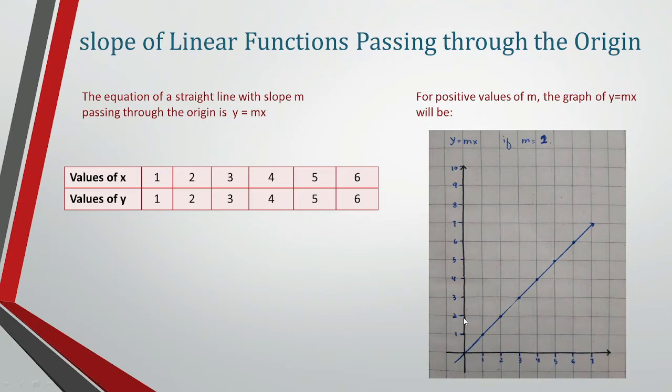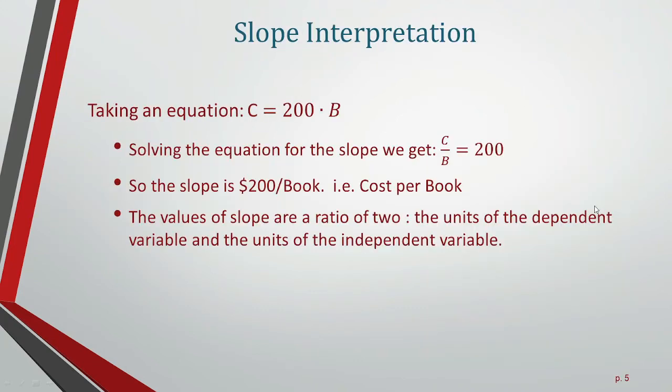Slope interpretation: the cost of numerous books can be found from the cost of a single book. Suppose the cost of a book is 200. Taking the equation C = 200B, where B represents the number of books and C represents the cost.